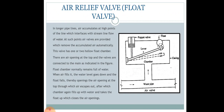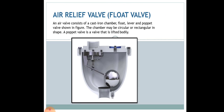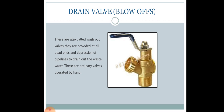The air relief valve, also called the float valve, is used in long pipelines where air accumulates at certain points, interfering with the streamline flow of water. At such points, air valves are provided which remove the accumulated air automatically. This valve has one or two hollow float chambers and is mainly used for removing entrapped or accumulated air. It consists of a cast iron chamber, a float, a lever, and a poppet valve — a valve that is lifted bodily. The chamber may be circular or rectangular in shape.